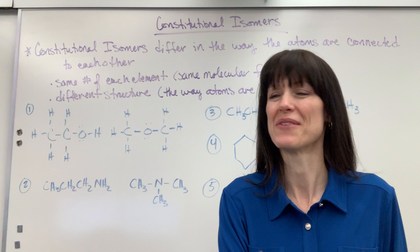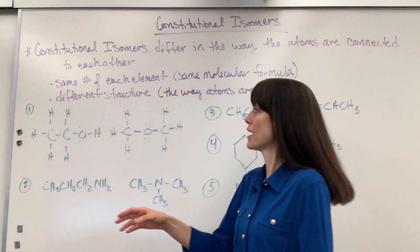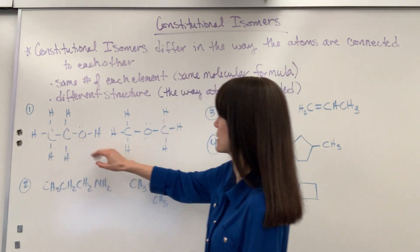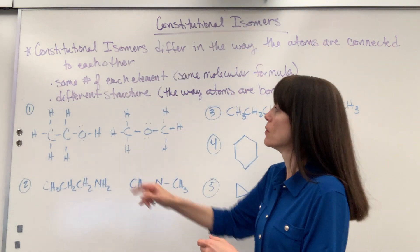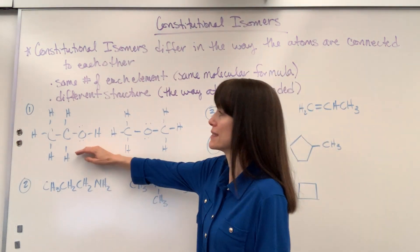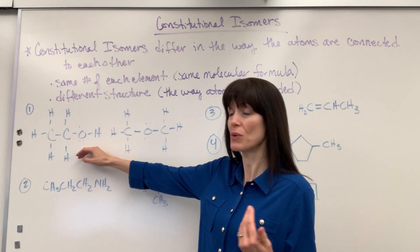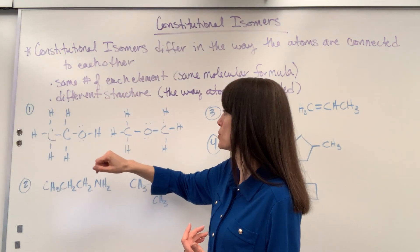So I have five examples that I want to do with you. Here's our first one. So notice I've got my two carbons, we have six hydrogens, one oxygen. That would be the same molecular formula, but the oxygen is bonded differently. Here is an alcohol functional group. You have the oxygen at the very end on the last carbon with the hydrogen.